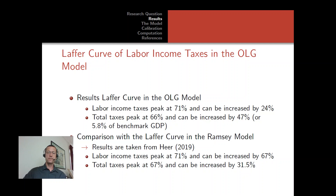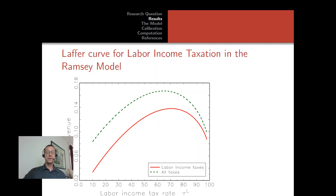We find the total tax peak at 66% and can increase total taxes by 47%, amounting to approximately 6% of GDP. Taking results from Public Economics Chapter 5 using the Ramsey model, we see that labor income tax revenues and total tax revenues differ between the two models — 24% vs. 67% and 47% vs. 31% respectively — due to the presence of retirees in the OLG model.